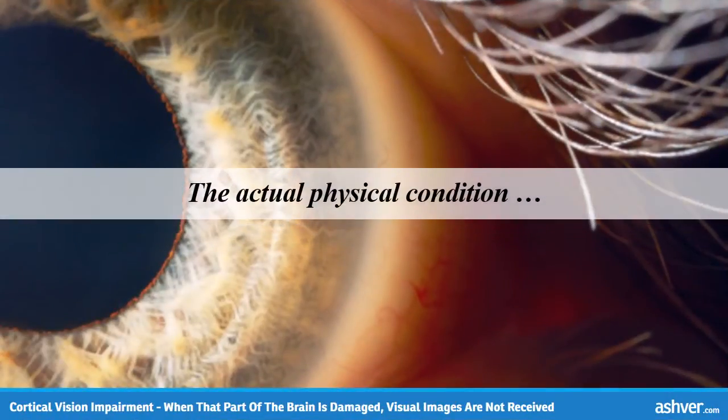The actual physical condition of the eye can be normal, and yet the child cannot see or is visually impaired. This damage can be mild to severe, temporary or permanent, depending on the amount and exact location of the damage. Hypoxia is, of course, one of the top causes of this condition.